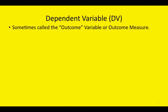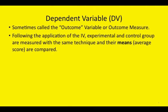Sometimes it's called the outcome variable, or possibly outcome measure. Following the application of the independent variable, experimental and control groups are measured with the same technique, and their means, or average score, are compared.